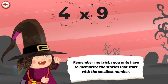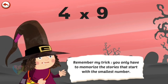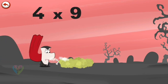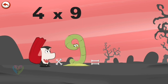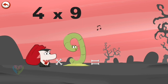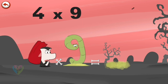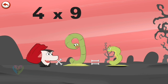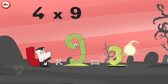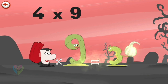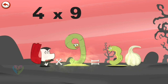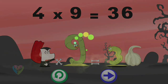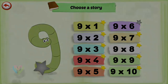Remember my trick: you only have to memorise the stories that start with the smallest number. What's the story of 4 times 9? When Vamp 4 sees Slimey 9, he really wants to bite him. But Slimey 9 whistles to get the help of his friend the caterpillar, which is in the shape of a 3. The caterpillar pulls out a clove of garlic in the shape of a 6. Like all vampires, Vamp 4 hates garlic. 4 times 9 is 36.